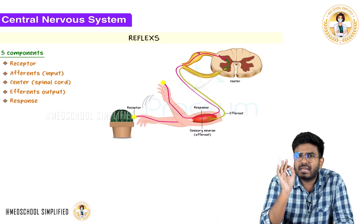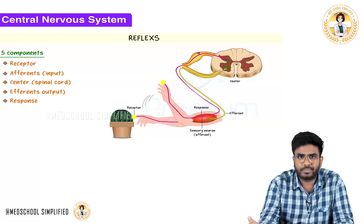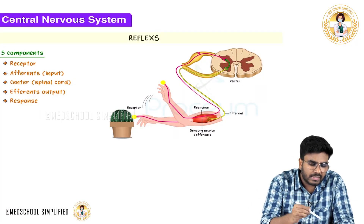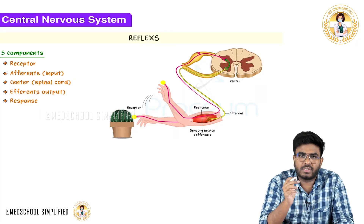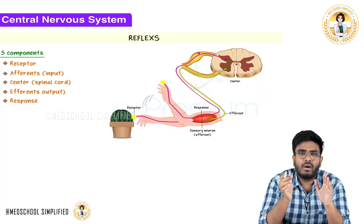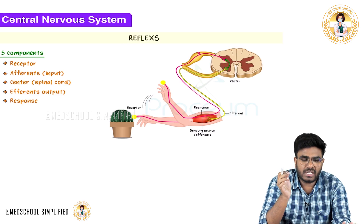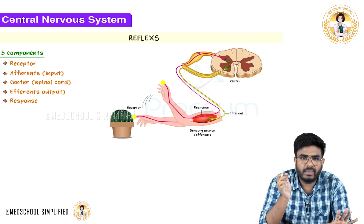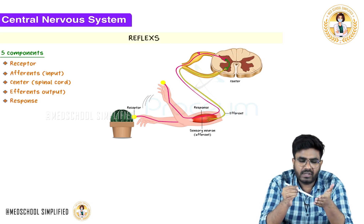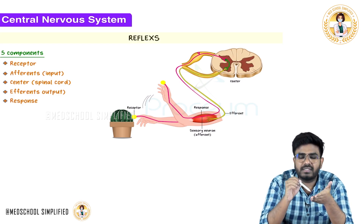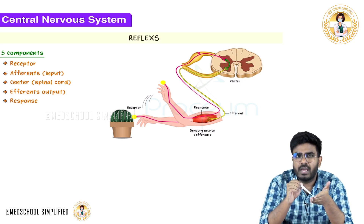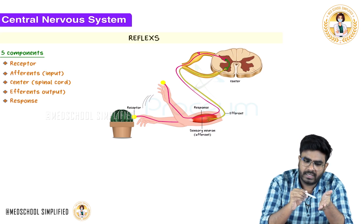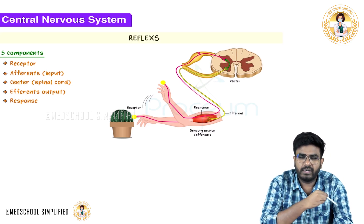Whenever there is a harmful stimulus — for example, whenever you touch a hot object or something very sharp — this information is a harmful stimulus. That harmful stimulus is going to stimulate a receptor, and first order neurons are activated.